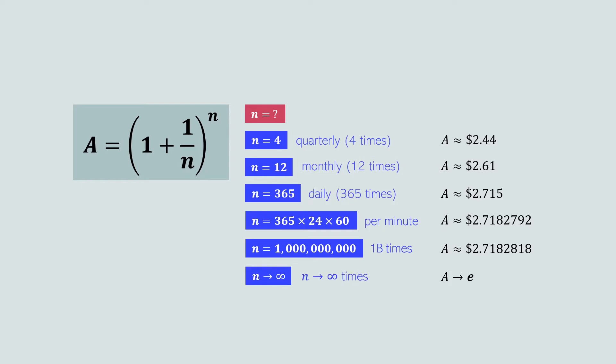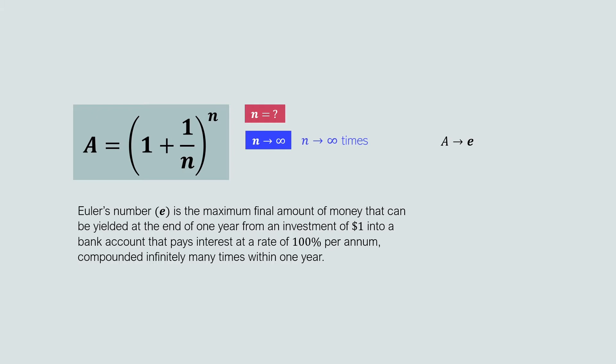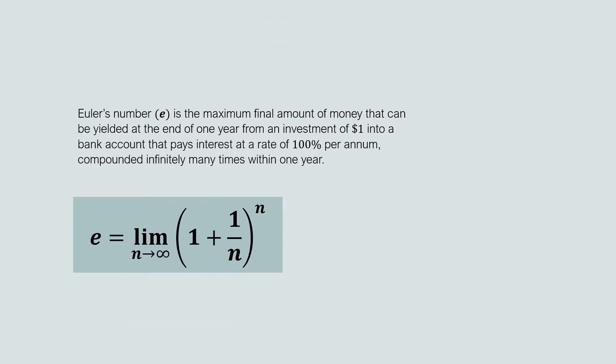Therefore, we can say that as N approaches infinity, A approaches E. Already at N equals 1 billion, the value of A looks incredibly similar to Euler's number, but is not quite exactly equal. This is the definition of Euler's number: mathematically, E equals the limit of (1 + 1/N)^N as N approaches infinity.